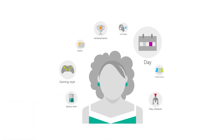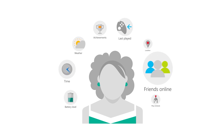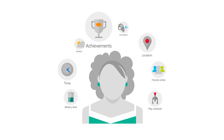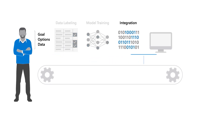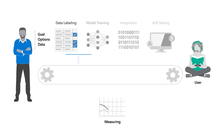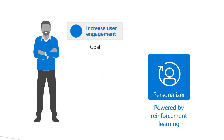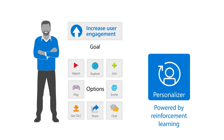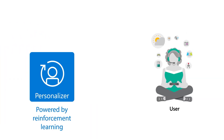The Personalizer service functions by ingesting information about a given user — in this case, an Xbox gamer — and provides content suggestions to surface back to them. The ingested information includes things like the user's last gaming achievements, online friends, gaming style, or even the day of the week. Normally, selecting what content to surface would go through multiple cycles of data labeling, model training, and integrations, then testing different content options by measuring user responsiveness. Personalizer takes care of all of that in one easy-to-use service because it is powered by reinforcement learning, meaning it works in real time and is dynamic, with its models constantly learning by observing how users respond to different things. The service is very adaptable to any environment, with little to no need for human fine-tuning.